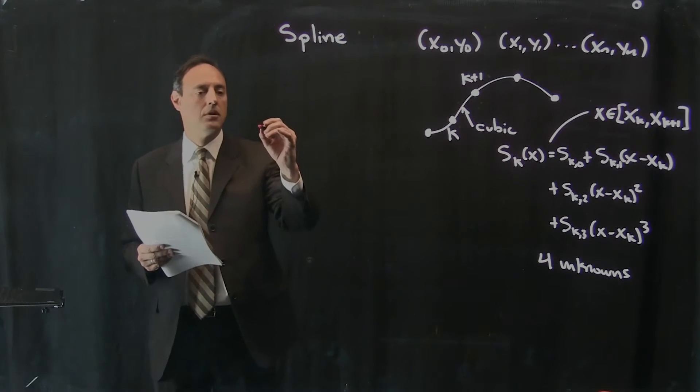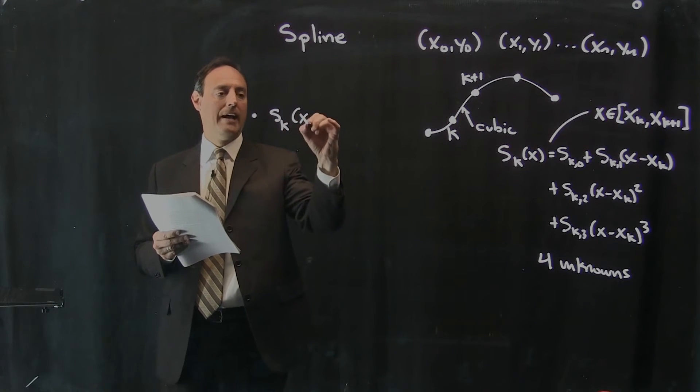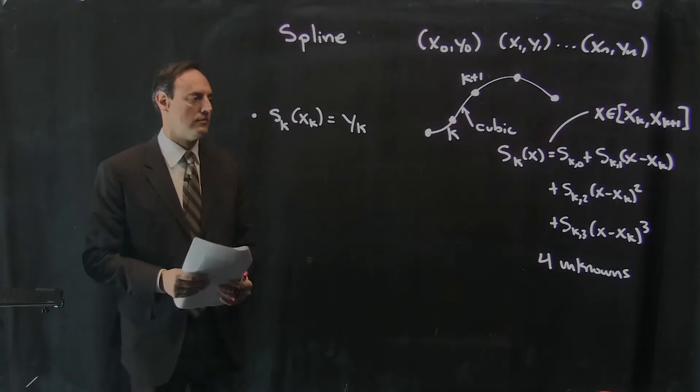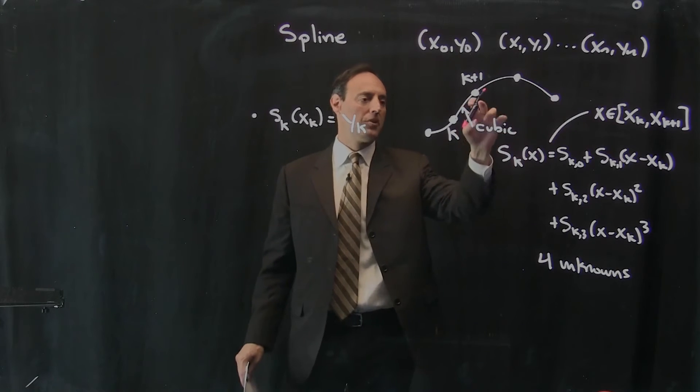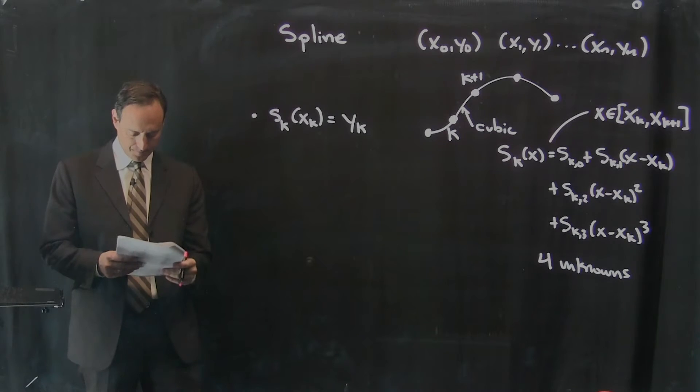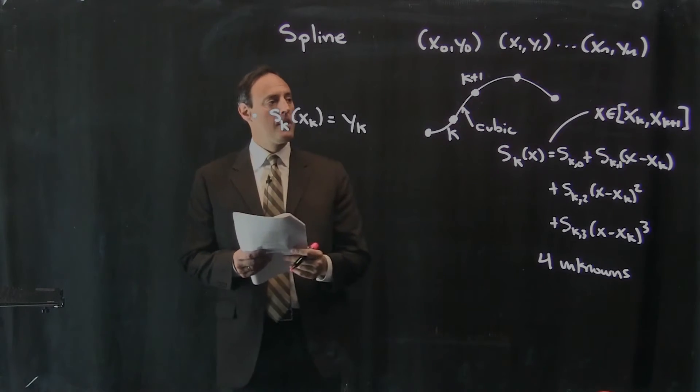So what are the constraints that I want to start thinking about? So first of all, constraint number one, s of k at x of k has to go through the data. If I'm looking through here and this cubic is in here, it has to go through the point. That's constraint number one.